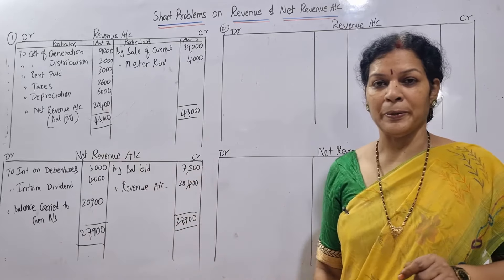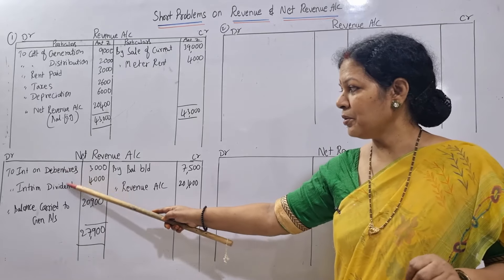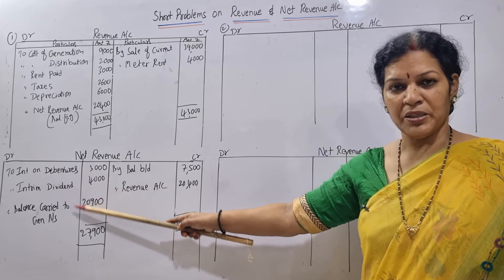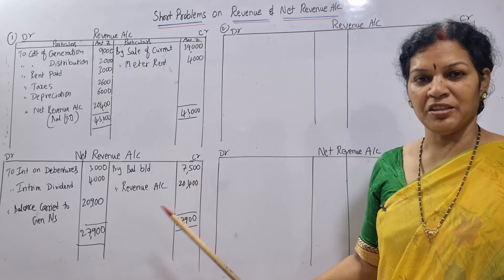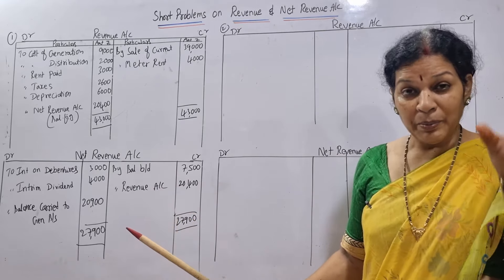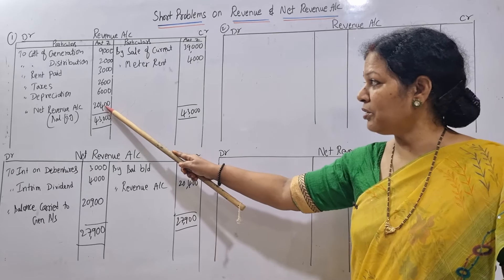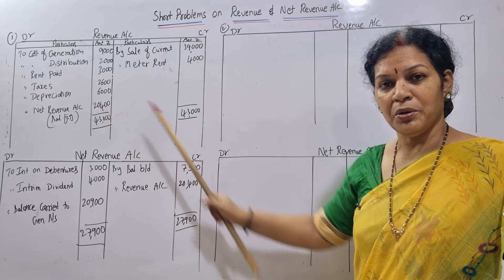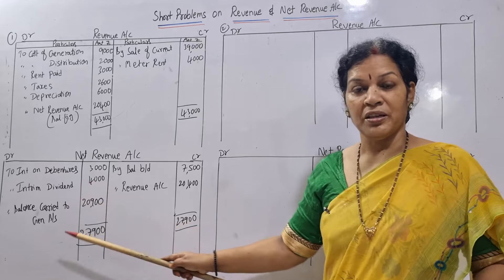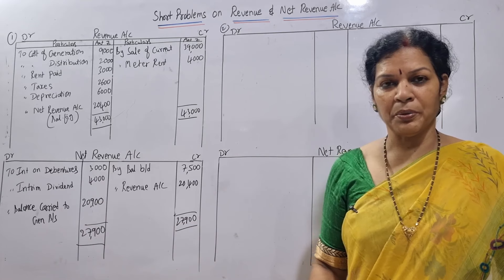Net revenue account is very simple. You write either interest or dividend. Interest and interim dividend - both are expenses, so written on debit side. Credit side has the opening balance from last year and the amount transferred from revenue account. At last you got 20,900, which is transferred to the balance sheet always. Remember: general balance sheet is what we prepare, so in final accounts this amount goes to the balance sheet.